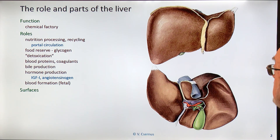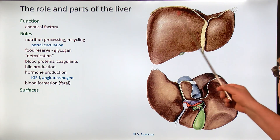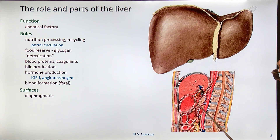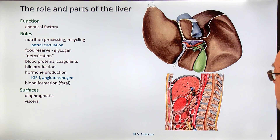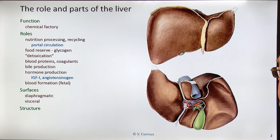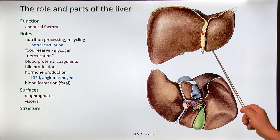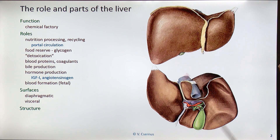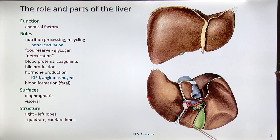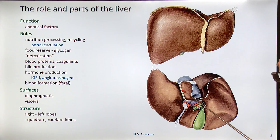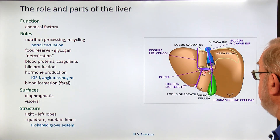Now let's see what the liver looks like. It is relatively simple in structure. It has two surfaces: a diaphragmatic surface facing upward and a visceral surface facing the internal organs, which is a little more complex. On the diaphragmatic surface you can clearly see it divided into the bigger right lobe and the smaller left lobe, separated by the falciform ligament. On the visceral surface it is slightly more complicated: the left lobe is a single entity, but the right lobe is partially separated by the inferior vena cava — giving rise to the caudate lobe — and by the gallbladder, which separates the quadrate lobe.